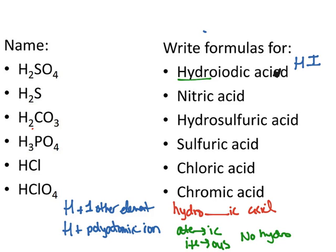Nitric acid. Notice there's no hydro in front. So this was from a polyatomic ion. Nitric turns backwards into ate. So what is nitrate? Nitrate is NO3 with a one minus charge. So how many H's, which have a positive one charge, do I need to balance this out? Just one. This is HNO3. And let's get rid of the charge because it's a neutral compound.